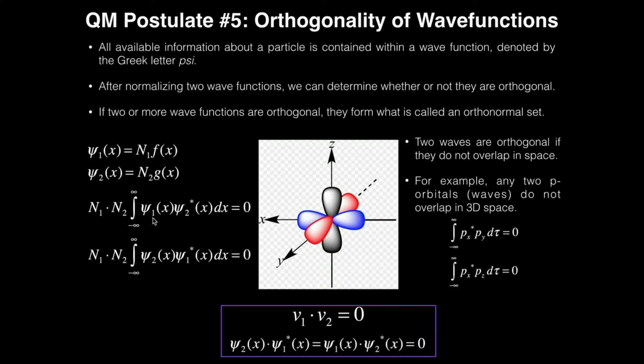So if it comes out to be 0, then ξ1 and ξ2 are perpendicular or orthogonal to each other. If it does not come out to be 0, then they're not.